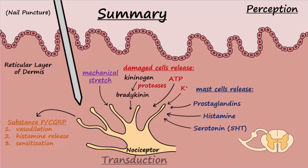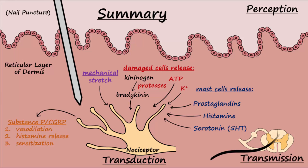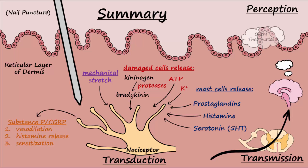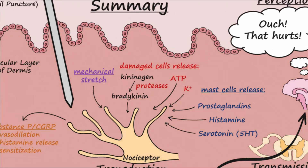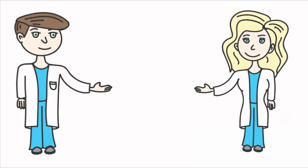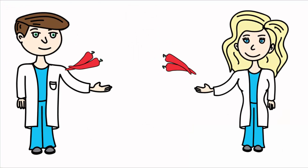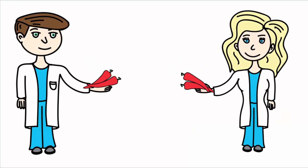Here now is a summary of pain transduction, which leads to an action potential being transmitted to the brain where one perceives, or becomes consciously aware of, the painful sensation. Thanks for watching.